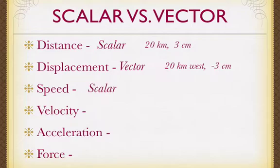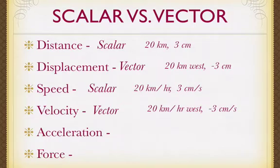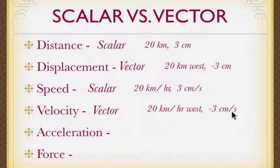Speed is a scalar. When you get a speeding ticket, the police don't care which way you're going — all they want to know is whether you're over the speed limit. Examples of speed: 20 kilometers per hour or 3 meters per second. Velocity gives us different information because it includes direction, making it a vector. Velocity includes the magnitude — 20 kilometers per hour — plus the direction. Or 3 meters per second in the negative direction, meaning we're going in the negative direction.